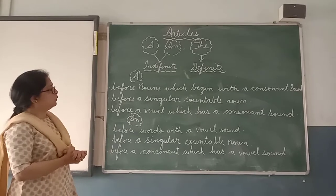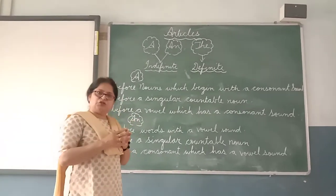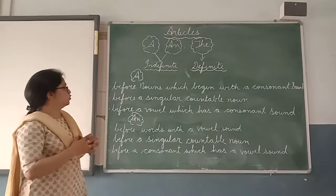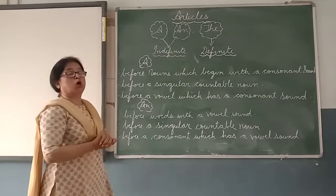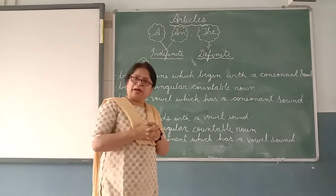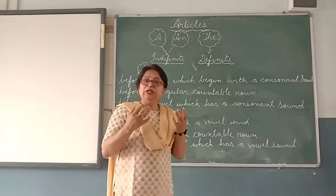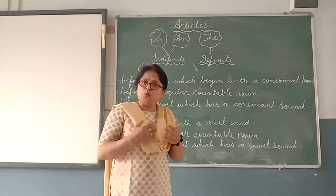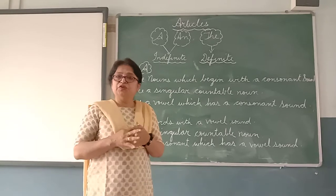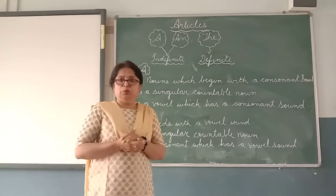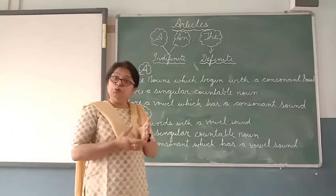The second use: A is used before a singular countable noun. The third use: A is used before a vowel which has a consonant sound. Sometimes words like university, unicorn, unique — they start with a vowel but have a consonant sound 'yu'. So we don't say 'an university'; we say 'a university', 'a unicorn', 'a unique'. This is something you need to keep in mind.